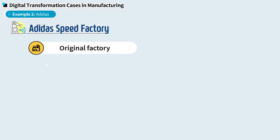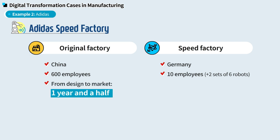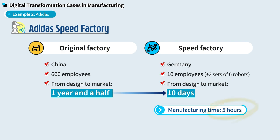The factory was originally located in China, where it hired 600 employees. But in Germany, it hires only 10 employees, with support of two sets of lines, each consisting of 6 robots. In the factory, Adidas could cut time from design to market from one and a half years to only 10 days. This factory is equipped with various digital technologies including digital design, IoT, big data, and 3D printing. More importantly, when customers design their own style of jogging shoes, the machines manufacture a pair of shoes in just 5 hours.